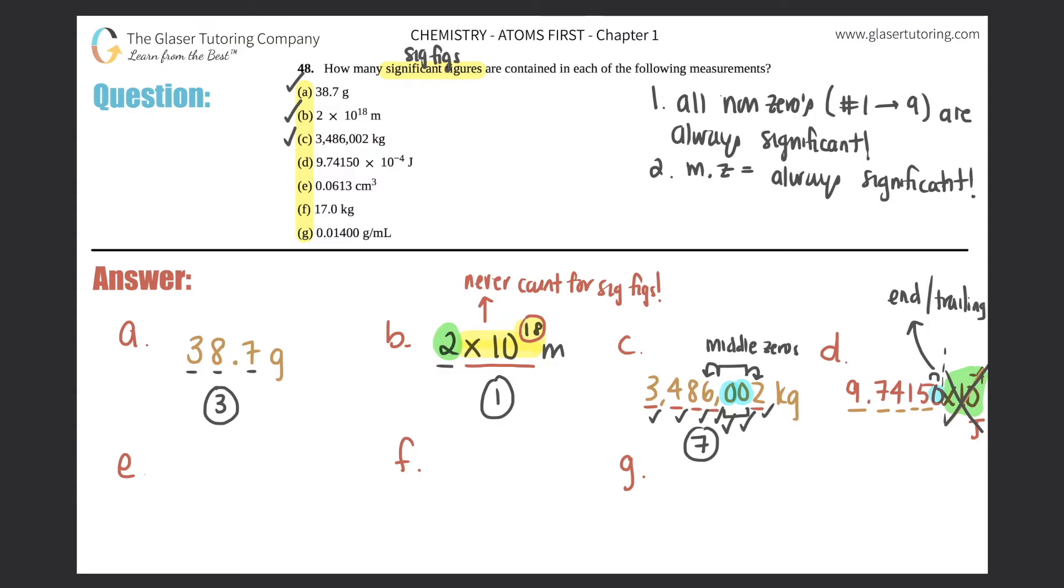Number three: trailing zeros are only significant if there is a decimal. If there is no decimal, they're not significant. This one is the tricky one. Trailing zeros are only significant if you see a decimal—I don't care where the decimal is, just as long as you see it. Do you see the decimal here? Yeah, it's right here. So since there's a decimal, this zero checks out. Now you have one, two, three, four, five, and six. This one has six sig figs.